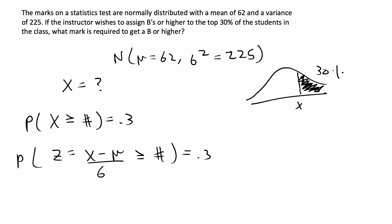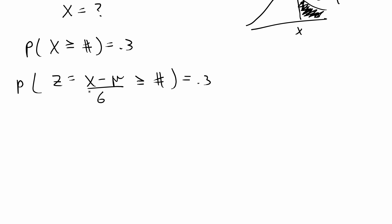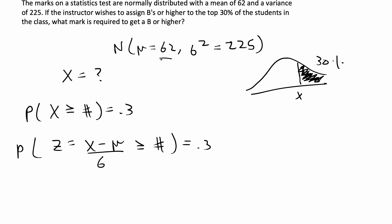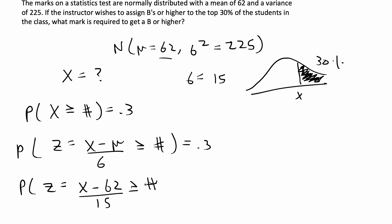I'm plugging in the z-score formula so we can find this value on a standard normal table. We're given μ = 62 and σ² = 225, so σ = √225 = 15. Into this formula we can plug in: z = (x − 62) / 15 has to be greater than or equal to some number, and that should give probability equal to 0.3.